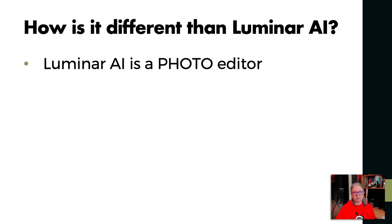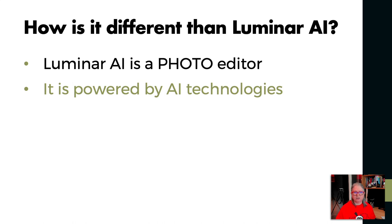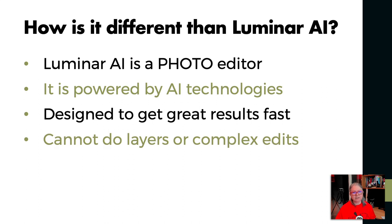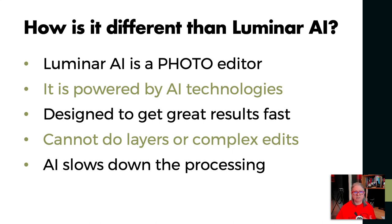Luminar AI is for photos only, whereas Luminar Neo will be able to edit all kinds of creative images — things like logos and design projects as well. Luminar AI is powered mostly by AI technologies and template-driven workflows, designed to get you great results really fast in a few quick steps. But its limitations are that it does not have layers, so you can't do some of the complex edits that you could do in Photoshop or Luminar 4. There have also been complaints about the speed at which Luminar AI runs, due to the amount of AI technology built in.